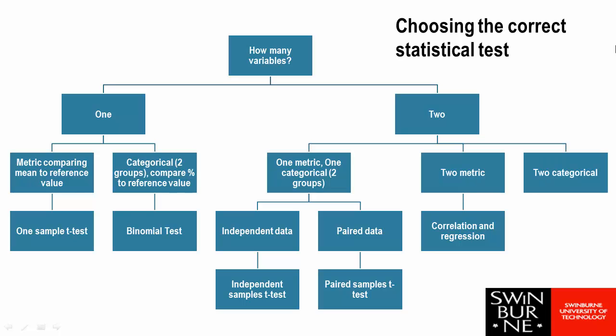If we have two categorical variables and we are looking at the relationship between our two categorical variables, we will conduct a chi-square test.